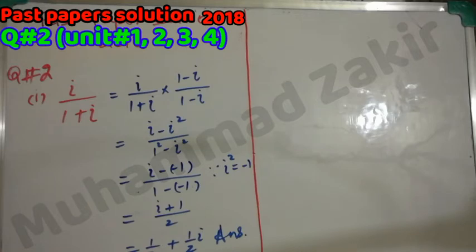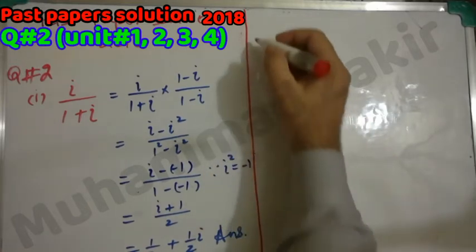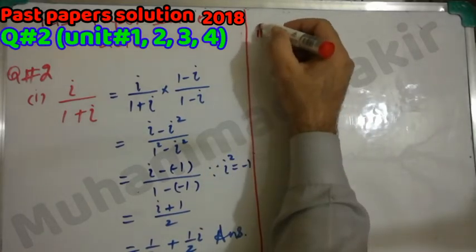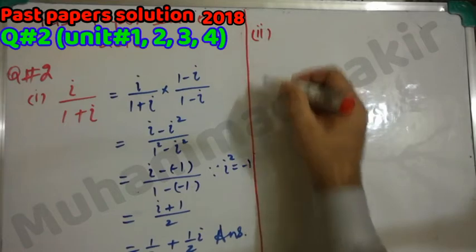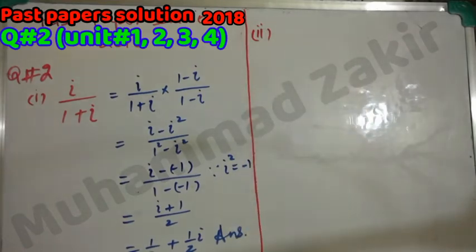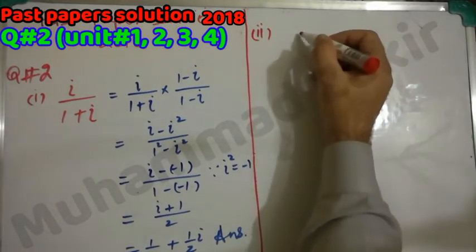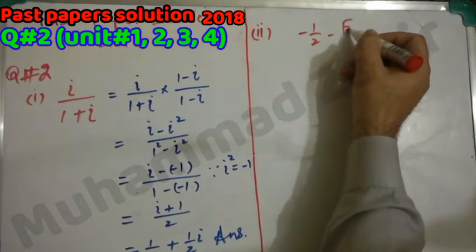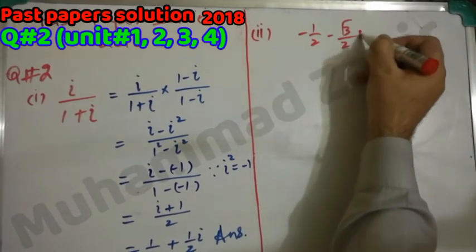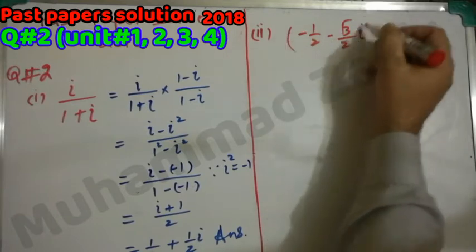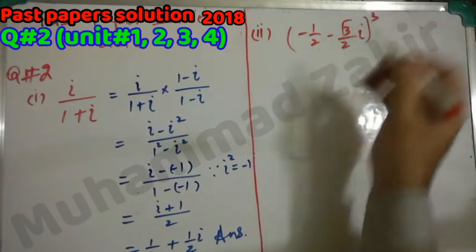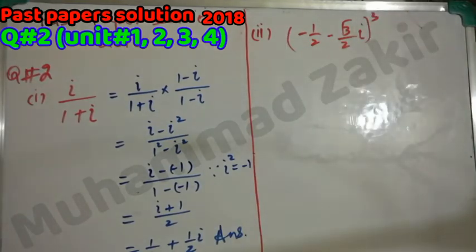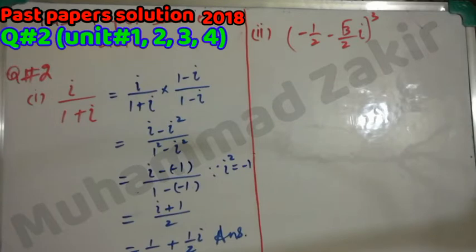Second part: simplify (-1/2 - √3/2·i)³. This is very easy — we just expand using the cube formula.